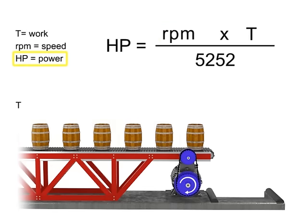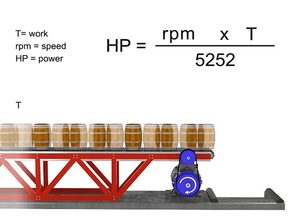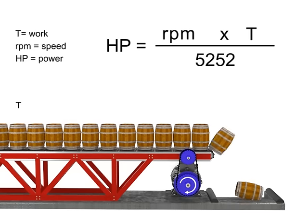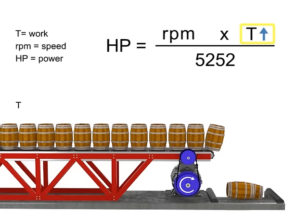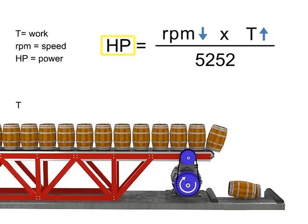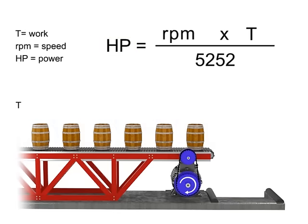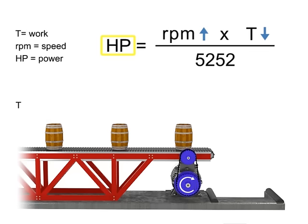If horsepower remains constant, then speed and torque are inversely proportional. As the torque increases, speed decreases to maintain constant horsepower. As torque decreases, speed must increase to maintain constant horsepower. Let's say we want the horsepower of our motor to remain constant but wish to increase the torque. If torque increases, the speed of the conveyor decreases so that the horsepower required of the motor remains constant. Similarly, if the torque decreases, the speed of the conveyor increases and the horsepower generated by the motor remains constant.